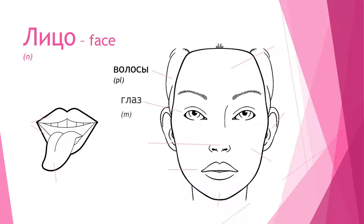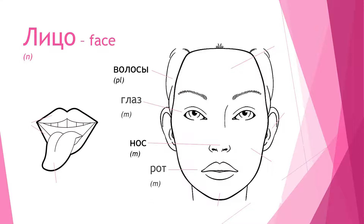This one you have seen before: глаз. It means eye, and it is male. The next one's very easy — just like English — нос. It is nose, another male one. And then рот, which means mouth. Also male.